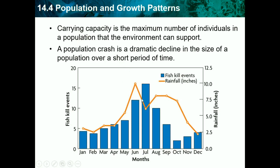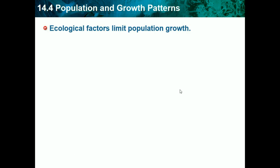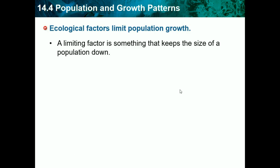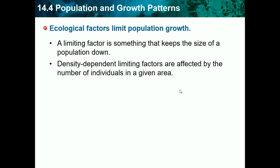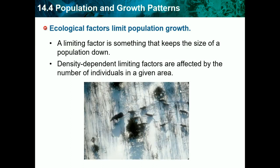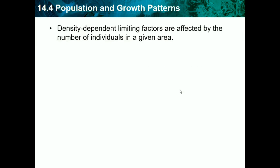Population crashes can happen very quickly — in as little as one to three months. Ecological factors limit population growth. A limiting factor is something that keeps the size of a population down. Density-dependent limiting factors are affected by the number of individuals in a given area. These include predation, competition, parasitism, and disease. For example, if there's more prey, predators eat more easily; if there are more individuals, competition for resources increases.